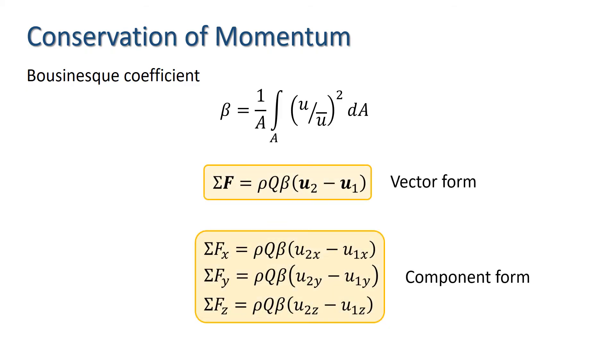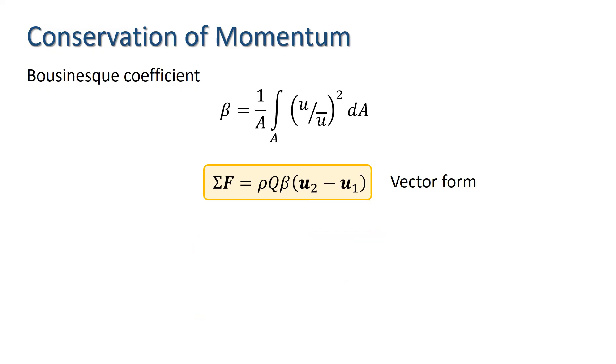This allows us to use the momentum equation derived for a stream tube for a wider range of domains like pipes and channels where the distribution of velocity over a cross section is not uniform. Note that because this is a vector equation it is important to get the direction of the forces and velocities in the right direction.